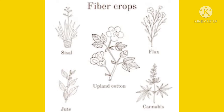Cotton is a fiber and comes under the non-food crops category — it is the world-famous fiber crop. Jute, like cotton, is also a fiber crop cultivated for commercial purposes. Jute is also known as the golden fiber.